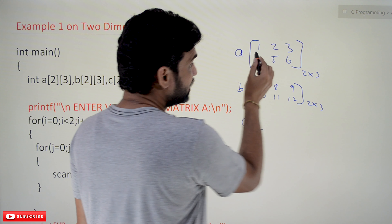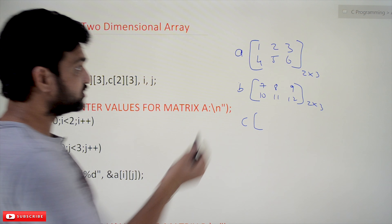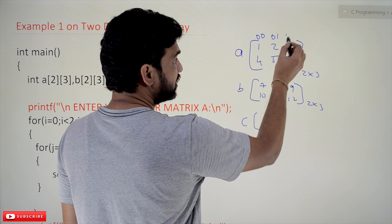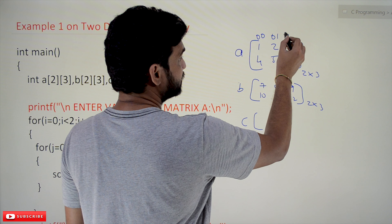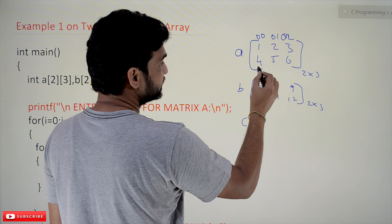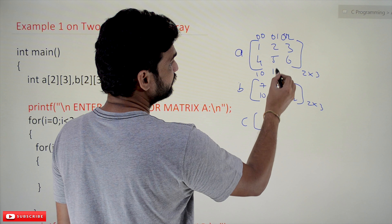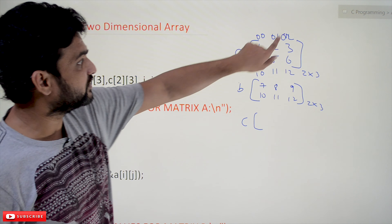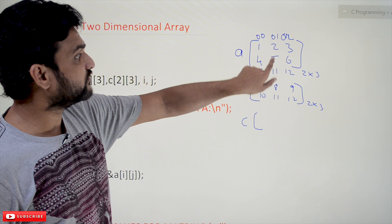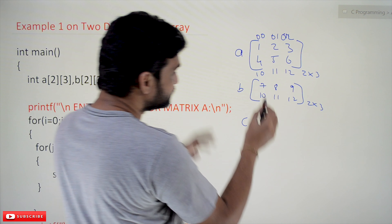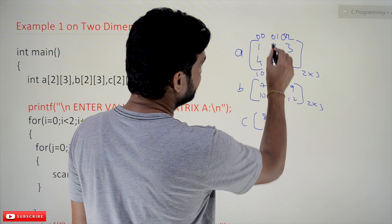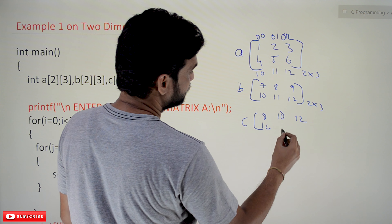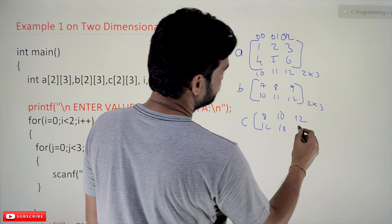The indices of the elements are: [0][0], [0][1], [0][2] for the first row, and [1][0], [1][1], [1][2] for the second row. After adding the two matrices, the result C is going to be: 8, 10, 12 in the first row, and 14, 16, 18 in the second row.